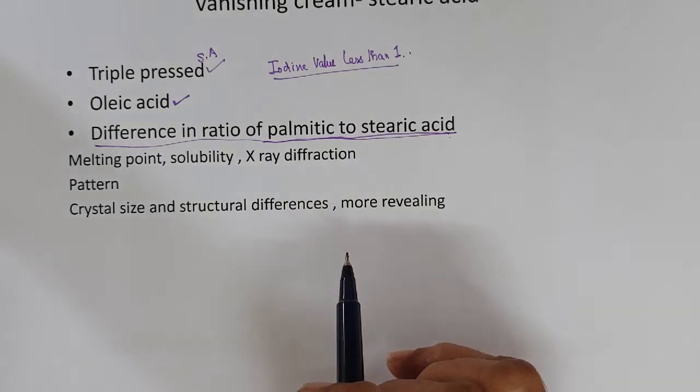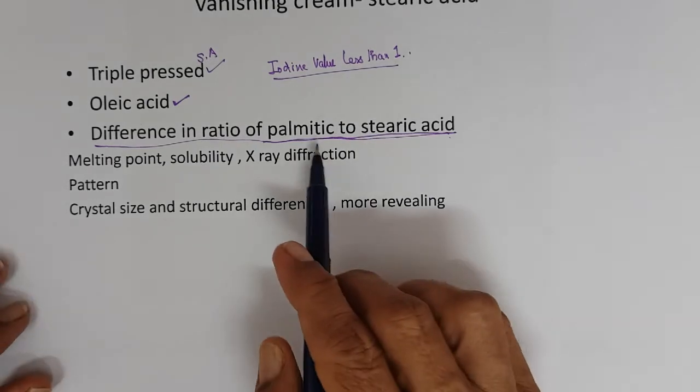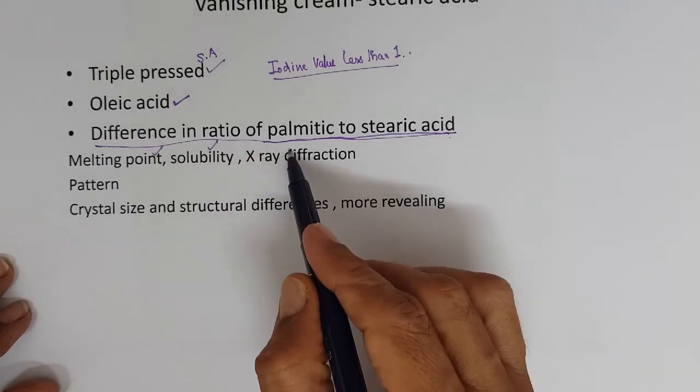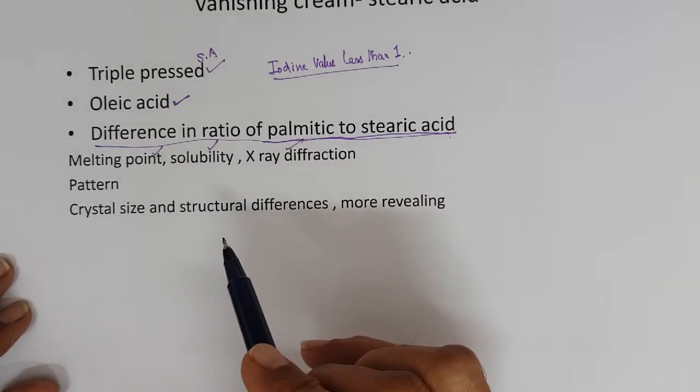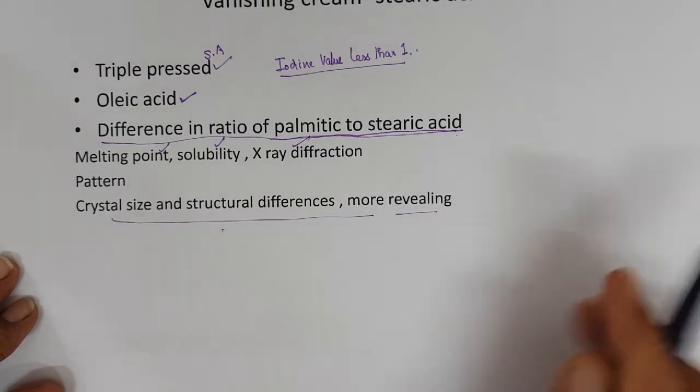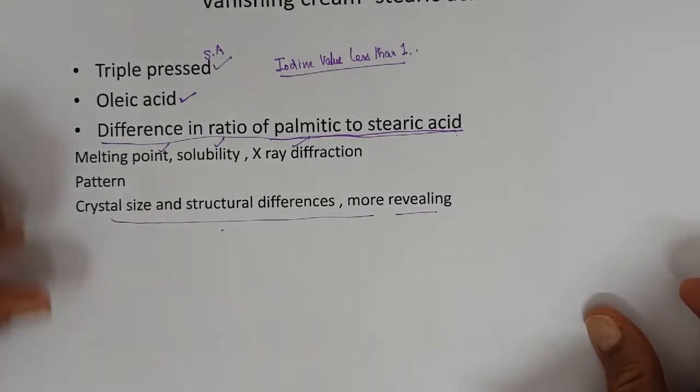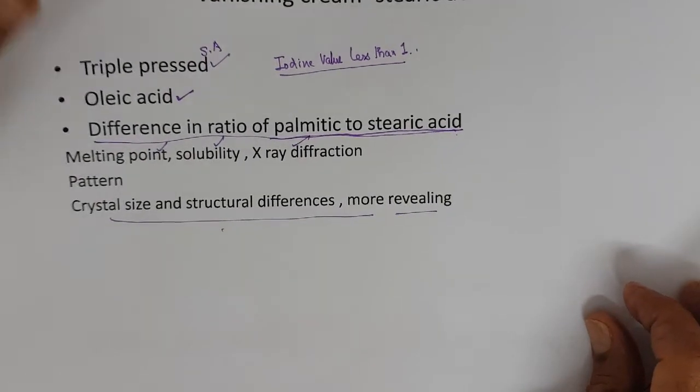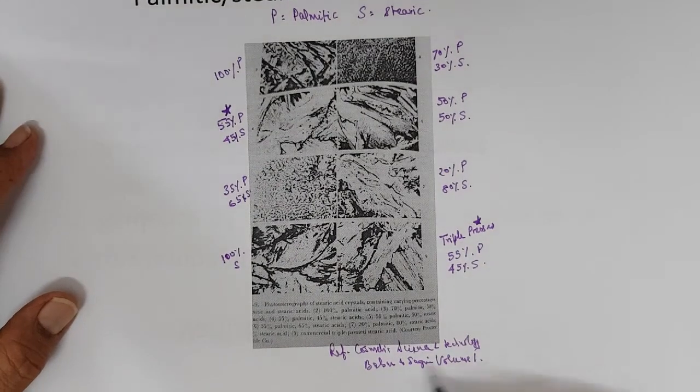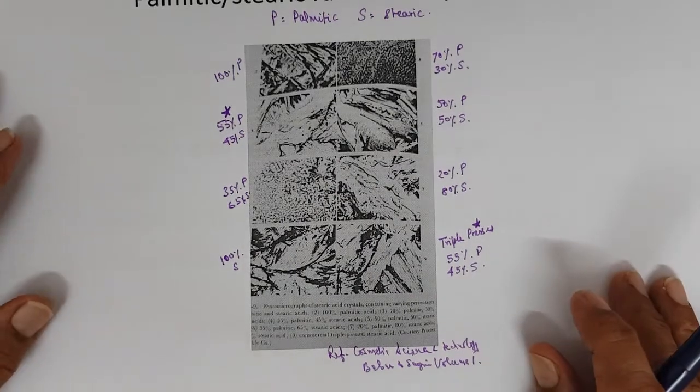Triple pressed stearic acid where the iodine value is less than 1 confirms the oleic acid content. Then ratio of palmitic acid and stearic acid - when palmitic acid and stearic acid ratio is different, because always stearic acid comes with palmitic acid, it is not pure stearic acid. Stearic acid and palmitic acid comes together. At various proportions the melting point is different, solubility is different, x-ray diffraction is different, and the crystal and structural differences is very revealing.